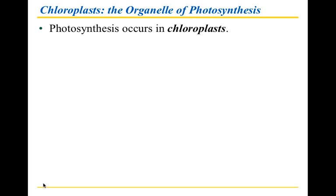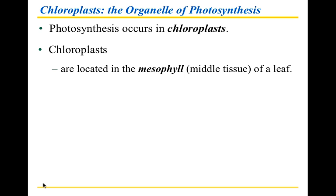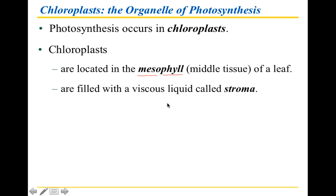The place where photosynthesis occurs is the other of the energy organelles, and it's called the chloroplast. If you recall, the energy organelle for cellular respiration was the mitochondrion, and now we're dealing with the chloroplast. Chloroplasts are located in something called the mesophyll. Meso means middle, and phil means tissue, so it's the middle tissue of a leaf.